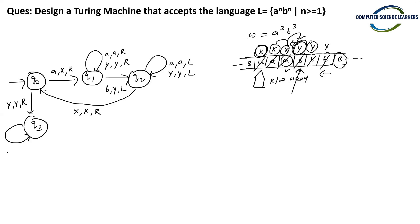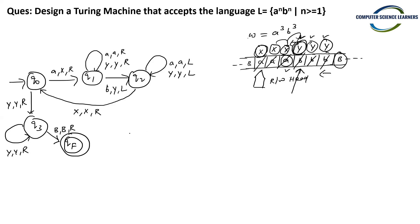In state Q3, we keep skipping Y's — one Y processed, move forward, second Y, third Y. After all Y's, if a blank space appears — meaning no B is left and all B's have been replaced by Y — then we move to the final accepting state. If instead a B appeared here, the machine would not accept.